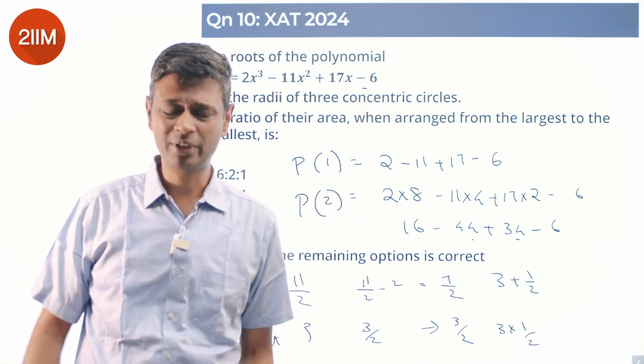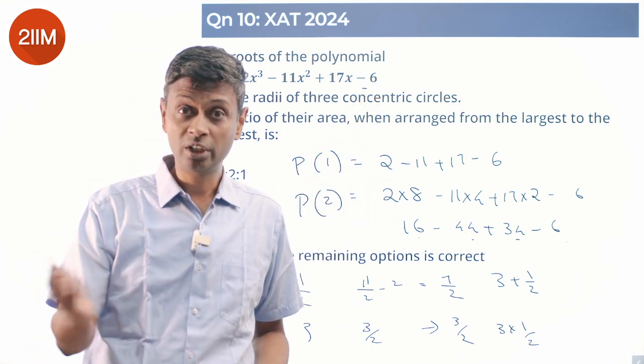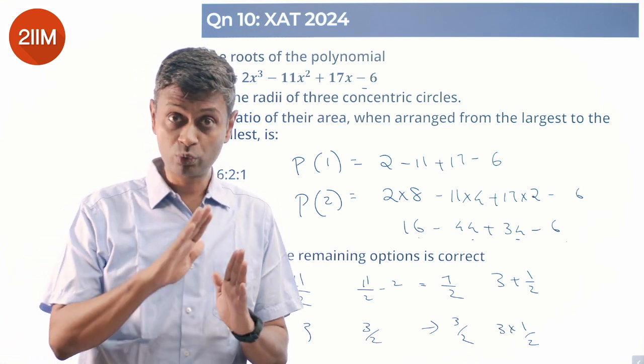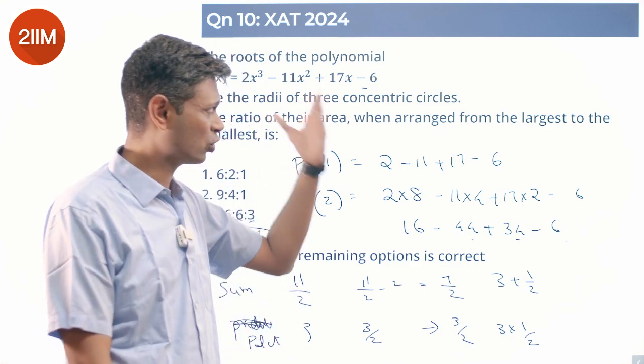A nice question. We have to effectively factorize this. 1 didn't work, we tried 2, once we found 2, then 3 works, 1/2 works. 1/2, 2, and 3 are the three roots. The roots are in ratio 1:4:6. Areas are in the ratio of squares.